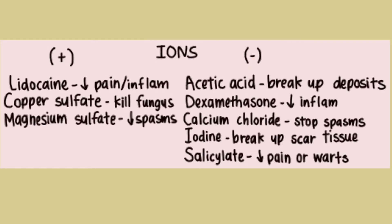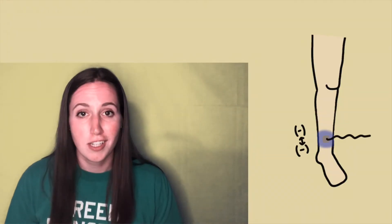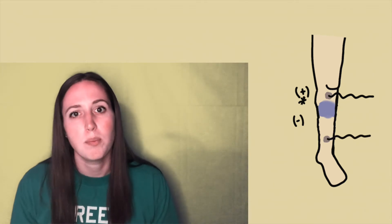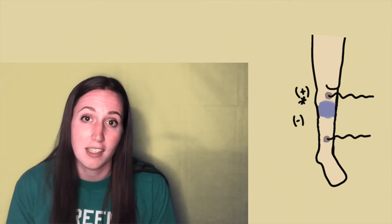Iontophoresis is another type of electrical stimulation that is used to help with wound healing. This involves using charged electrodes to push a medication into the body. For example, dexamethasone, which is negatively charged, and lidocaine, which is positively charged. These are both ions that are used to help get rid of inflammation. The medication is placed under the similarly charged electrode to help disperse it deeper into the body to help with that healing.